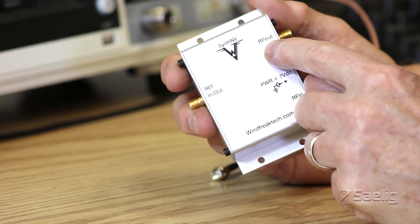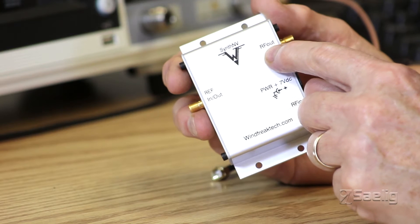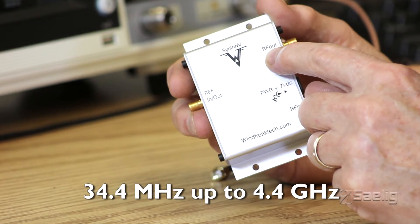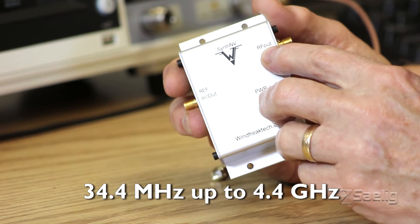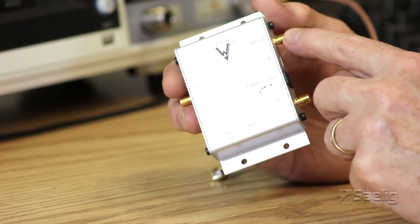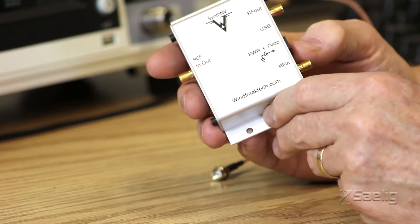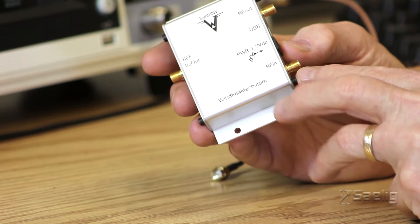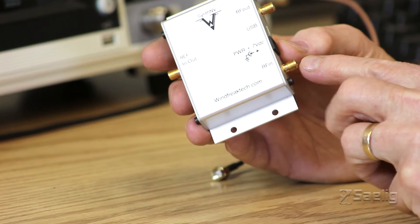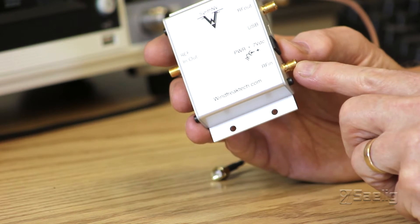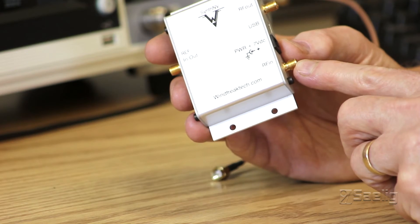First of all it's an RF generator and it has a bandwidth from 34.4 megahertz up to about 4.4 gigahertz out of this connector here. It also has an RF power detector which is an input here on this SMA connector.